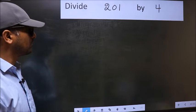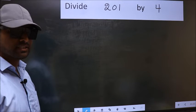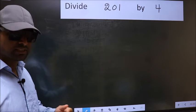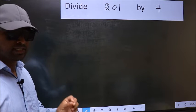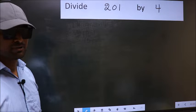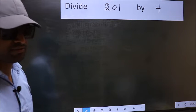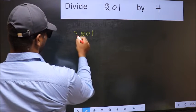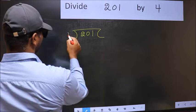Divide 201 by 4. While doing this division, many do this mistake. What is the mistake that they do? I will let you know, but before that we should frame it in this way: 201 and 4 here.